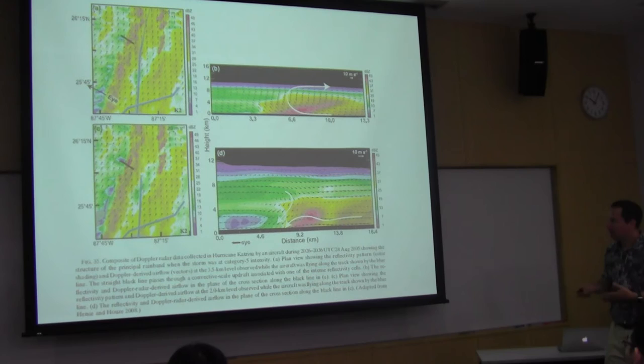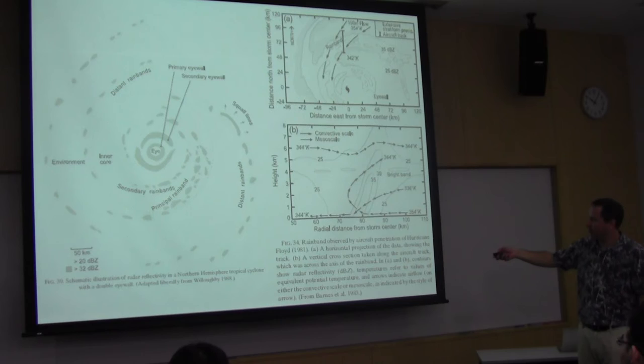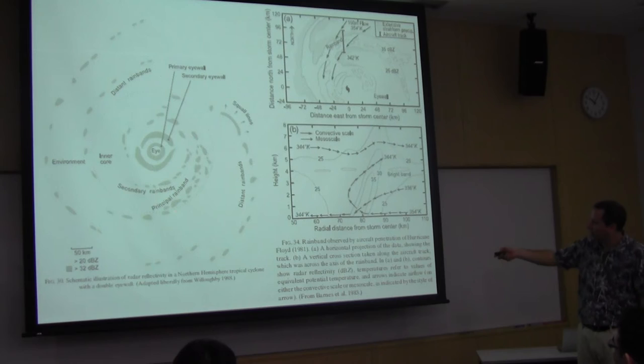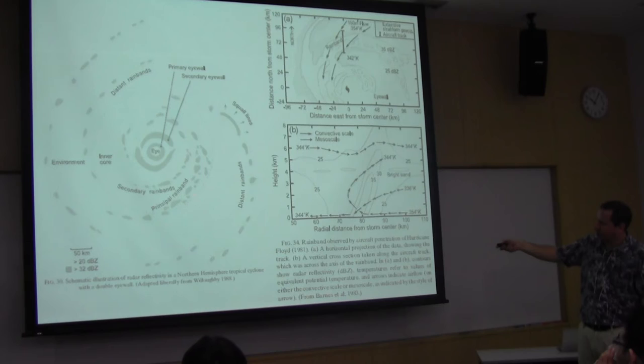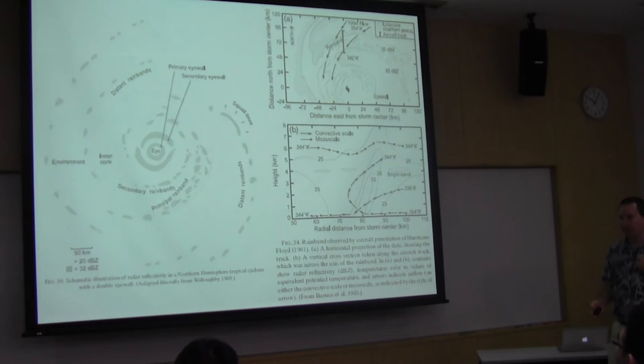One other point I'll make briefly—Anthony Diddle, who's also now at Illinois, looked at this very carefully for Hurricane Rita. I'm not going to show his results today, but he showed that it tends to be more convective here and more stratiform here. So as the convection basically matures as it travels downstream.